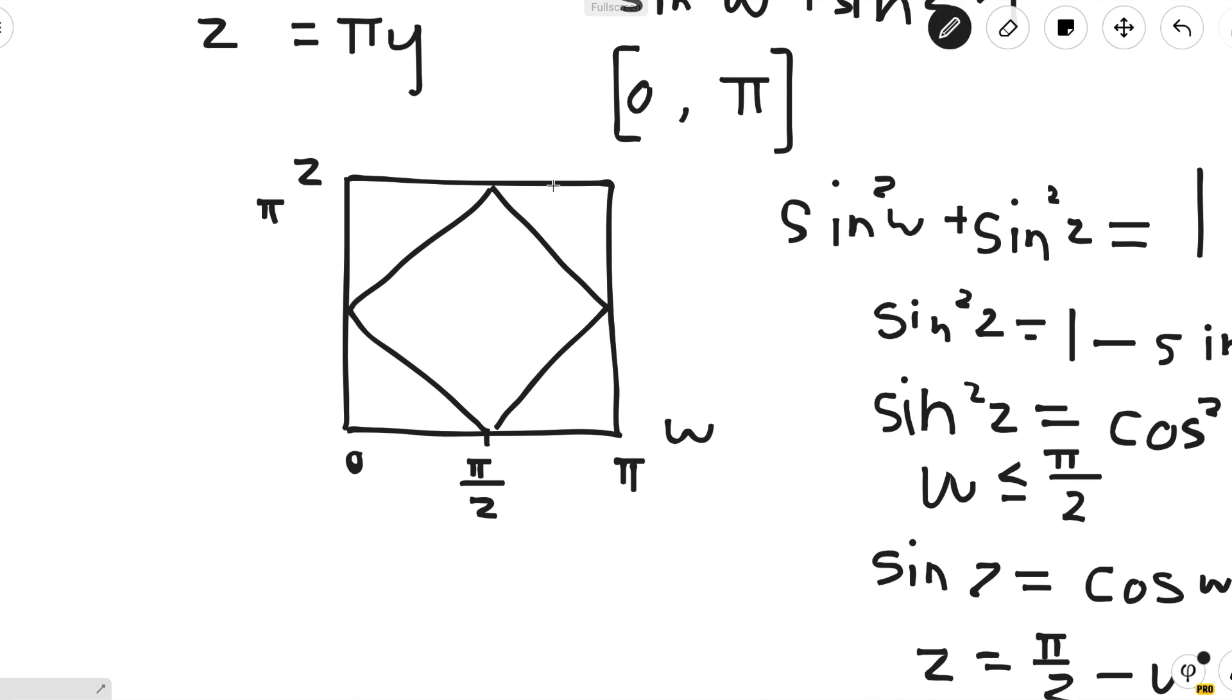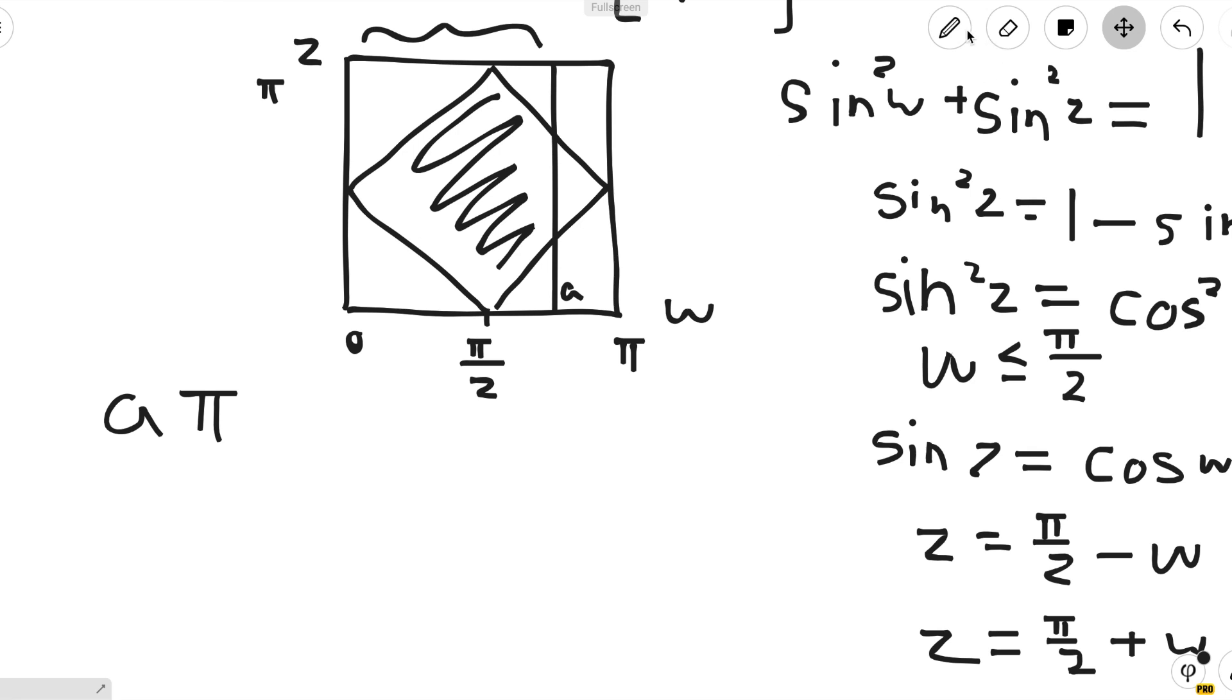Now we want to find the dividing line a such that the proportion of the area inside this region and to the left of this line over the region to the left is the greatest. The area of the region to the left would just be a times π, because a is the width and π is the height.